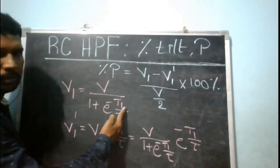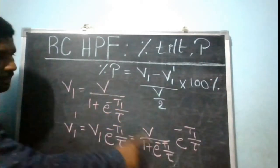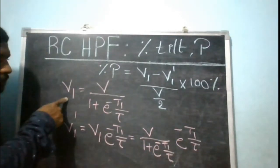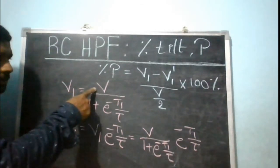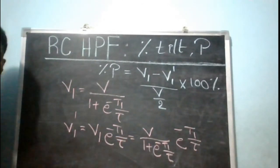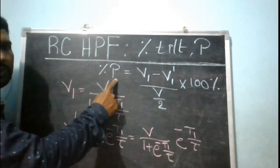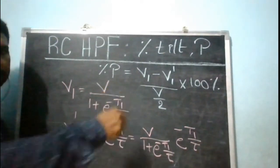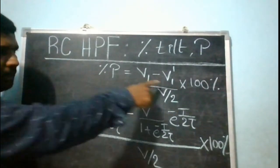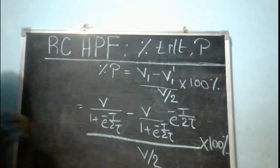Since T1 = T2 = T/2, replace T1 with T/2 to get expressions for V1 and V1' in terms of capital V and capital T. Substituting those values into the percentage tilt formula — (V1 − V1') / (V/2) × 100 — we get a simplified expression.